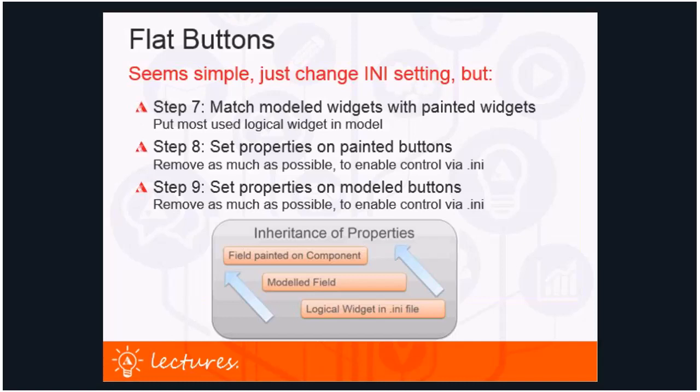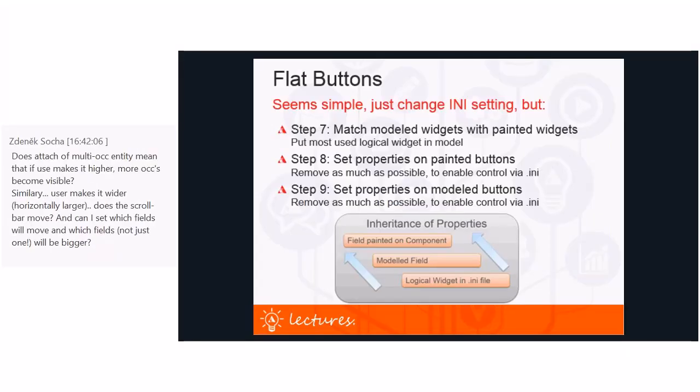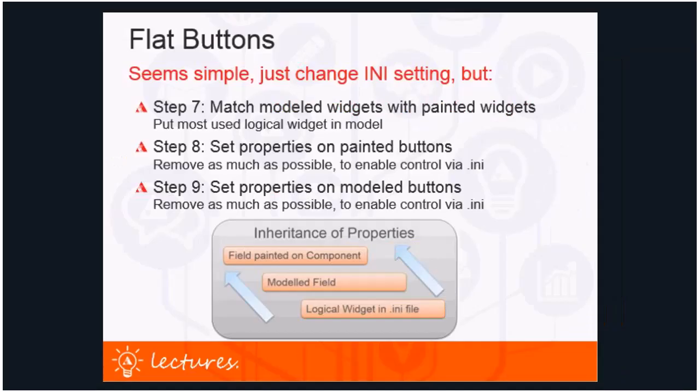Flat buttons seem simple, but steps seven, eight, and nine are closely related. You have to consider the inheritance of properties, which goes from the logical widget in the dot-ini file, which gets overruled by the modeled field, which then gets overruled by a field painted on the component. In step seven, the modeled widget must be matched with the painted widgets — put the most-used logical widget in the model. Step eight: set properties on painted buttons and remove as much as possible to enable control via the dot-ini file. Step nine: set properties on modeled buttons and remove as much as possible to enable control via the dot-ini file.